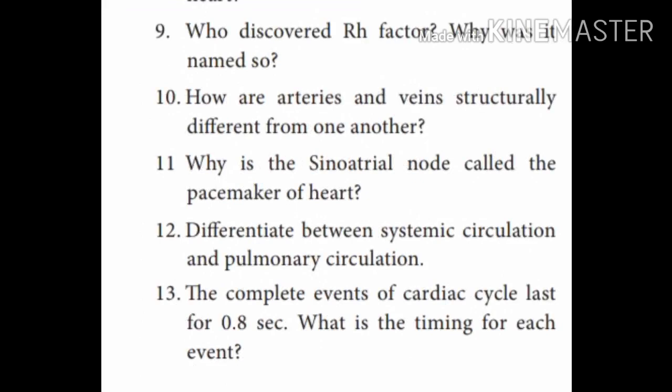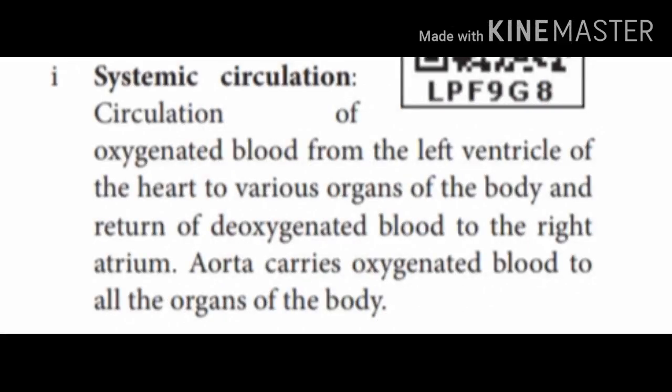Question twelve: Differentiate between systemic circulation and pulmonary circulation. Systemic circulation: oxygenated blood flows from the left ventricle of the heart to various organs of the body. Deoxygenated blood returns to the right atrium. The aorta carries oxygenated blood to all parts of the body. This is systemic circulation.